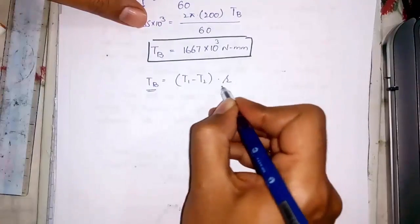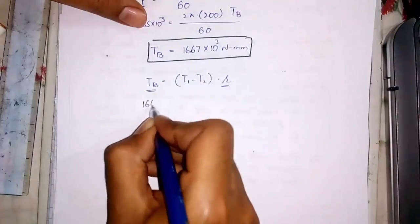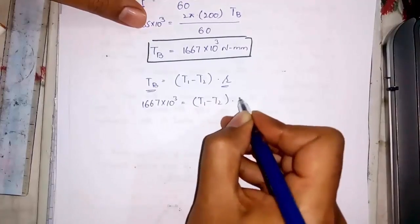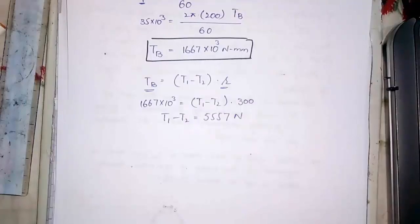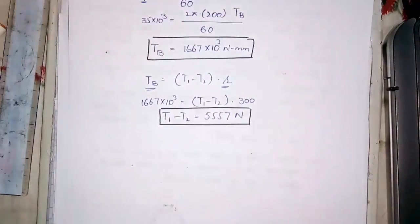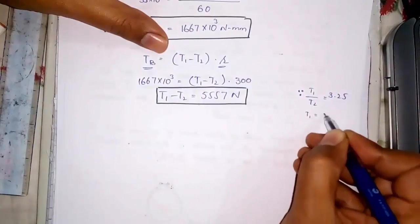We also know that for simple band brake, Tb is equal to T1 minus T2 into r. Tb and r are known. So, we have T1 minus T2 is equal to 5557 N.